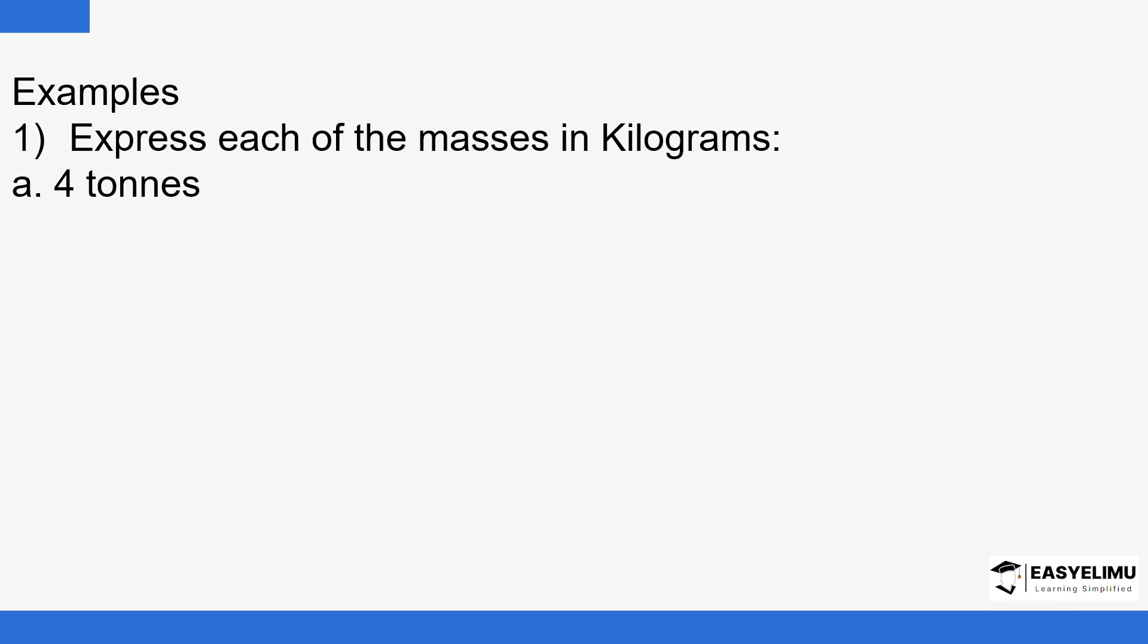We want to see how you can convert this unit. 1 ton equals 1,000 kilograms. If you have 4 tons, how many kilograms are those? That is 4 times 1,000, which is 4,000 kilograms. That is very basic.